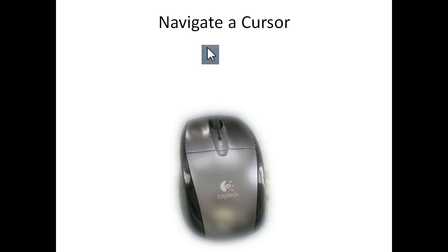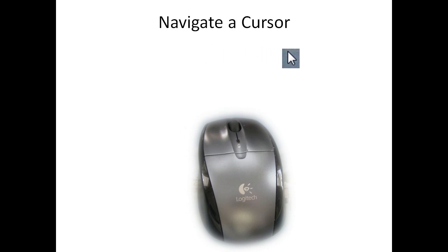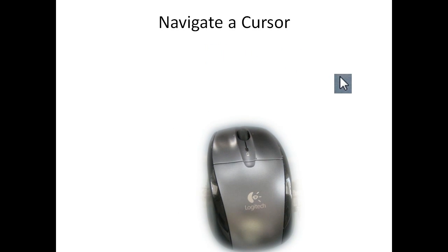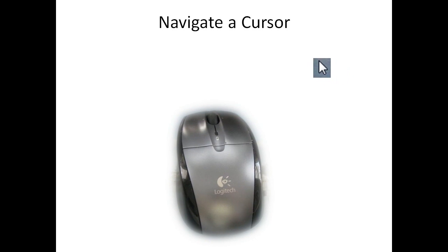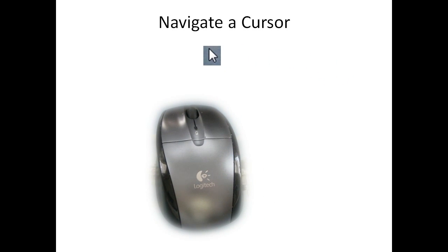So how do you navigate a cursor? What you do is you move the mouse with your hand. For example, if you move it to the right, you'll notice that the mouse moves a small amount versus the cursor. Then to move it left, you do the same thing, only moving it to the left.